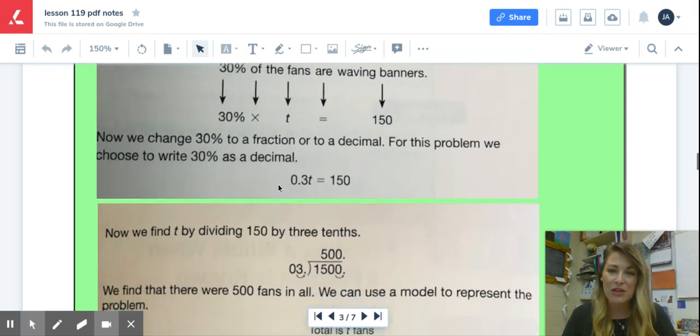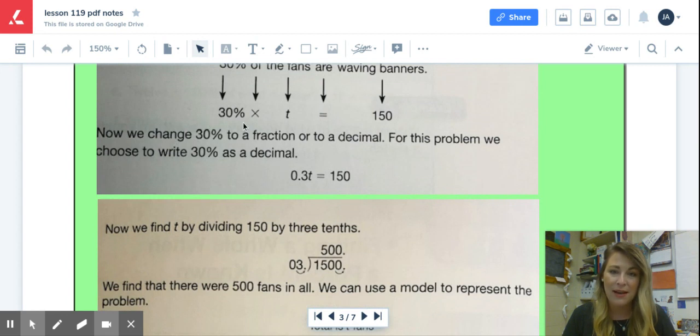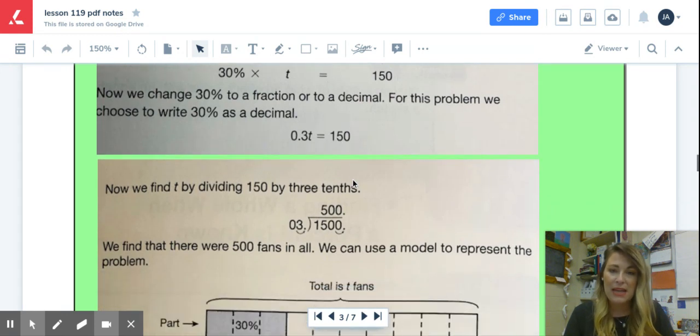We were told 150 were waving banners. Now we have an equation. The only step that they took right here is turning 30 percent into that decimal number. So 30 percent now becomes 0.3 or three tenths. So now we have three tenths times t. You don't even have to have that multiplication sign there. When you have your variable and your decimal next to each other, it implies that they're multiplied t equals 150.